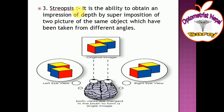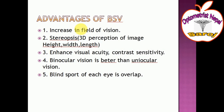The third grade is stereopsis. Stereopsis means perception of depth. It is the ability to obtain an impression of depth by superimposition of two pictures of the same object taken from different angles. The same object taken from different angles is superimposed by both the left and right eyes — this is called stereopsis of binocular single vision.